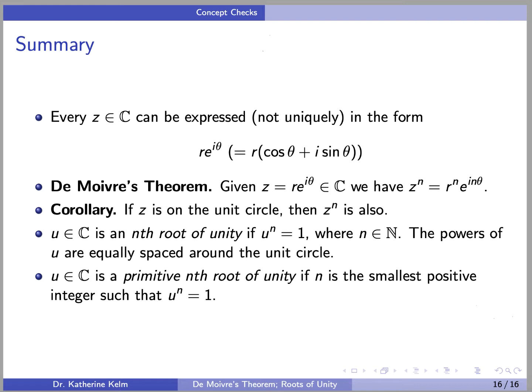In summary: every complex number z can be expressed — not uniquely — in polar form r·e^(iθ). De Moivre's theorem states that if z = r·e^(iθ), then z^n = r^n·e^(inθ), with the important corollary that if z is on the unit circle, then z^n is also. An nth root of unity is a complex number which, when taken to the nth power, gives 1; its powers are equally spaced around the unit circle. A primitive nth root of unity is one where n is the smallest such positive integer.